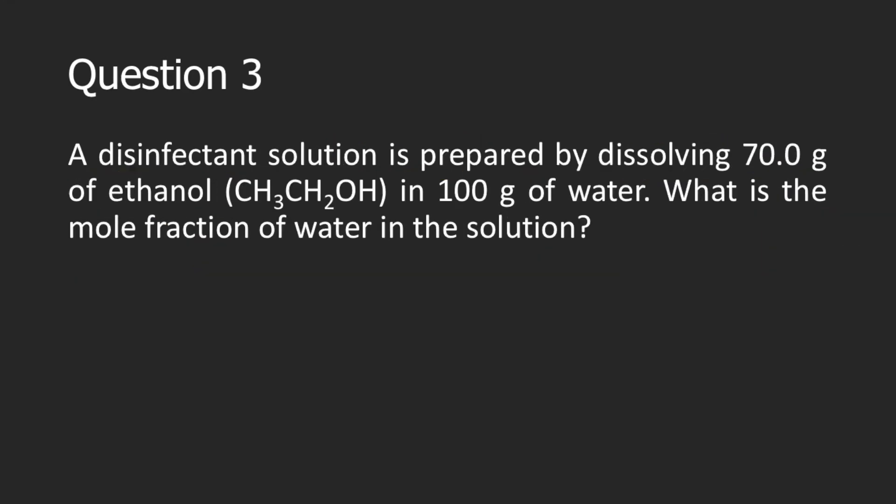Question 3 is just similar to question 2, so if you want to practice on your own, you can pause the video and solve the problem. Question 3: a disinfectant solution is prepared by dissolving 70 grams of ethanol in 100 grams of water. What is the mole fraction of water in the solution? Again, we are not given the moles — instead we are given the mass, 70 grams of ethanol and 100 grams of water. So the first thing we need to do is compute for the moles of each component.